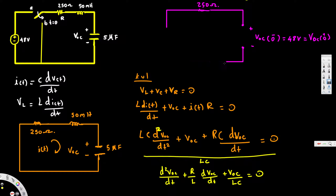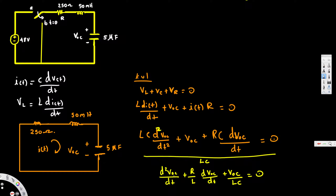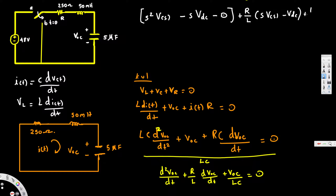The Laplace transform says: for the second-order derivative, we replace it with s²V(s) − s·Vdc − 0, where Vdc is the initial condition. The zero comes from the derivative of Vdc being zero since it's a constant. For the first-order derivative, we replace it with s·V(s) − Vdc. The term (1/LC)·Voc becomes (1/LC)·V(s). Setting equal to zero.